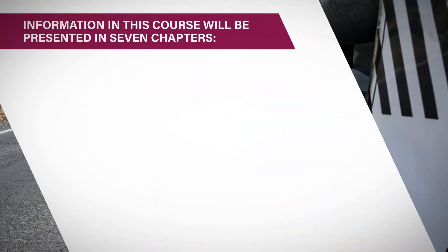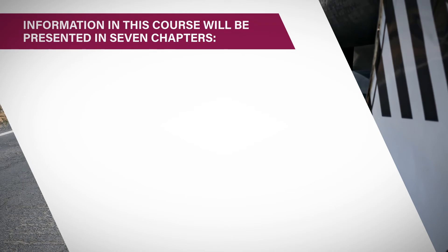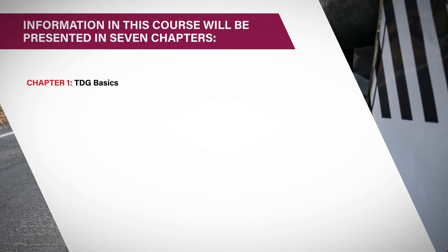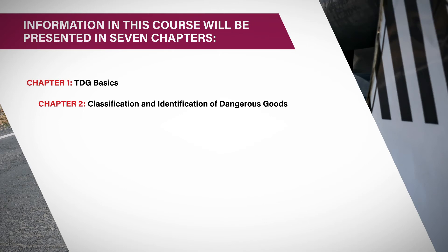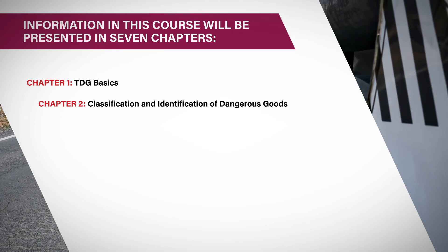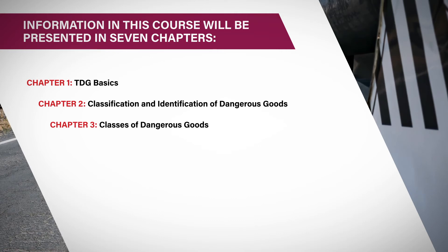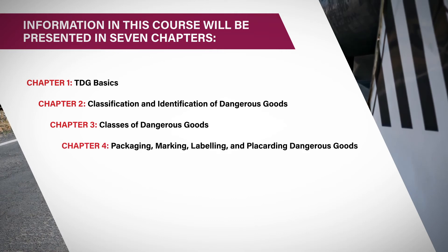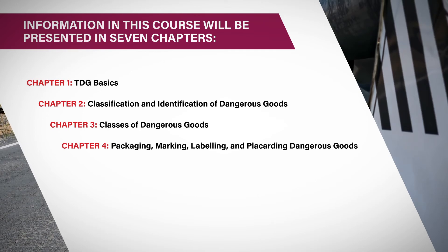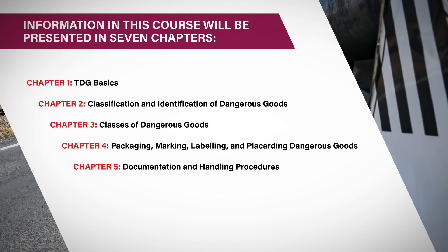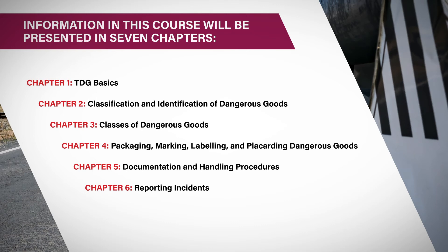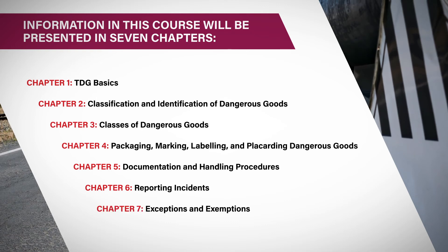Information in this course will be presented in seven chapters: Chapter 1, TDG Basics; Chapter 2, Classification and Identification of Dangerous Goods; Chapter 3, Classes of Dangerous Goods; Chapter 4, Packaging, Marking, Labeling, and Placarding Dangerous Goods; Chapter 5, Documentation and Handling Procedures; Chapter 6, Reporting Incidents; and Chapter 7, Exceptions and Exemptions.